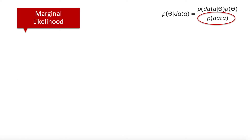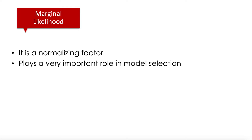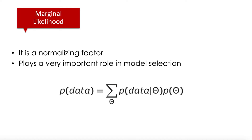What is the marginal likelihood? Remember the term in the denominator. That is first of all a normalizing factor to make the posterior an actual probability. But at the same time, it plays a very important role in model selection. The marginal likelihood is generally very expensive to calculate — we need to condition on the model parameters, multiply by the probability of those parameters, and sum or integrate across all possible parameters.